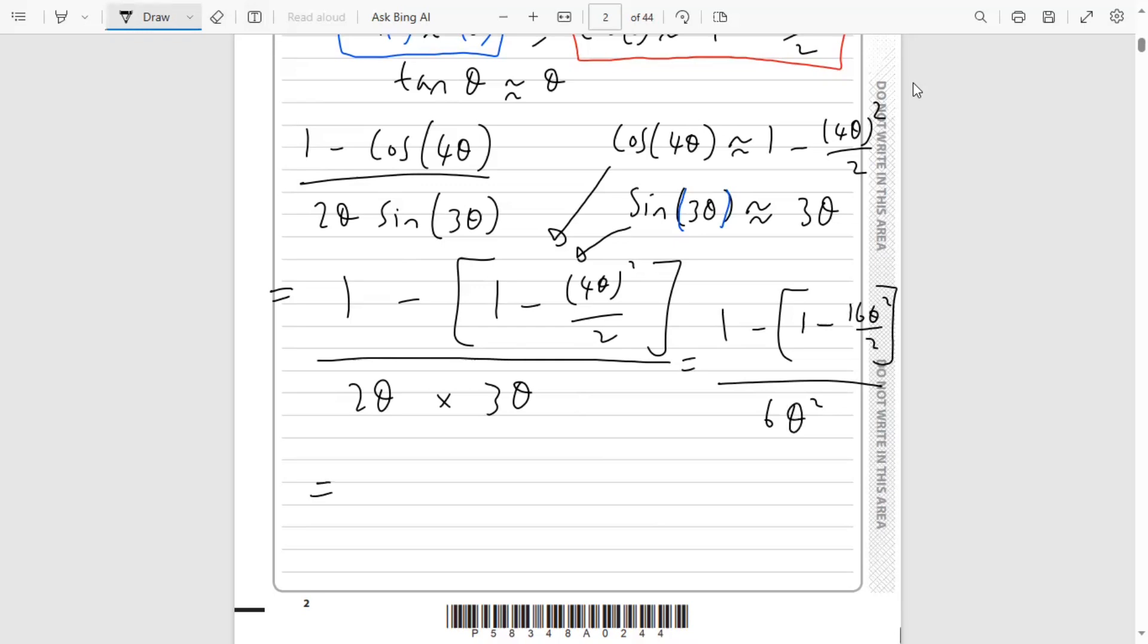We've got 1 minus 1, so those cancel out to 0. Then we've got minus a minus 16θ²/2. When you've got two negatives together that's a positive, so we get positive 16θ²/2, which is 8θ² divided by 6θ².